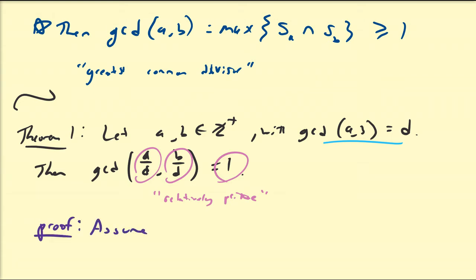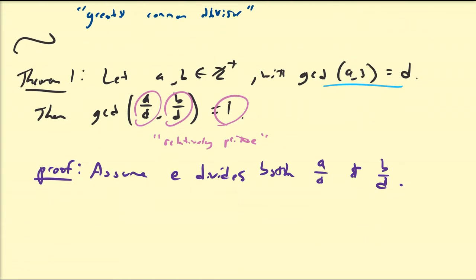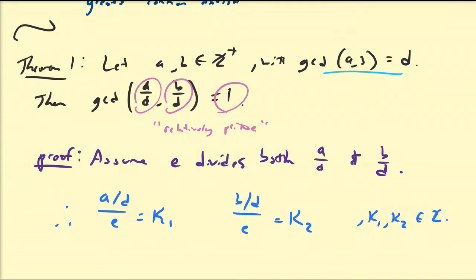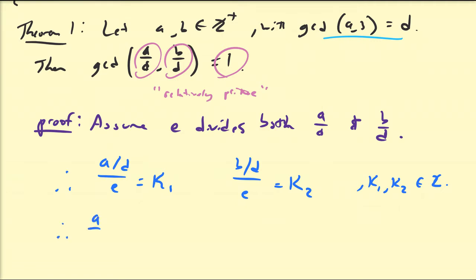We're going to assume that E divides both A over D and B over D. If the greatest common divisor of both of these is 1, that means the only possible value E can have must be 1. So we're going to try to get a relation on E and force it to be 1. With that assumption, A over D divided by E equals some integer K1, and B over D divided by E equals some integer K2, where K1 and K2 are positive integers. This means A divided by D equals K1·E and B divided by D equals K2·E.